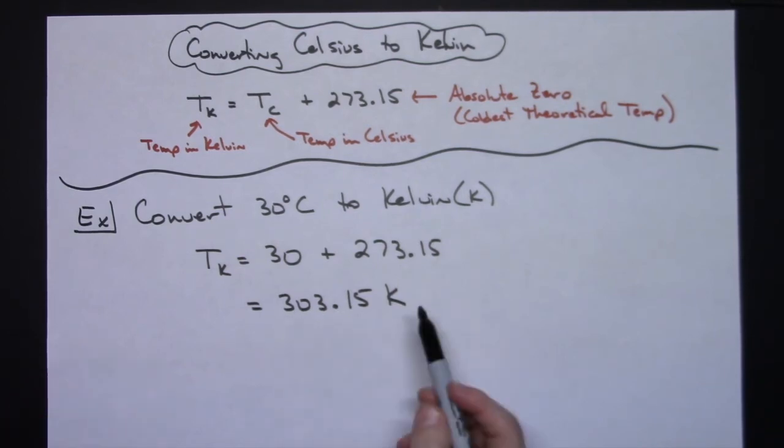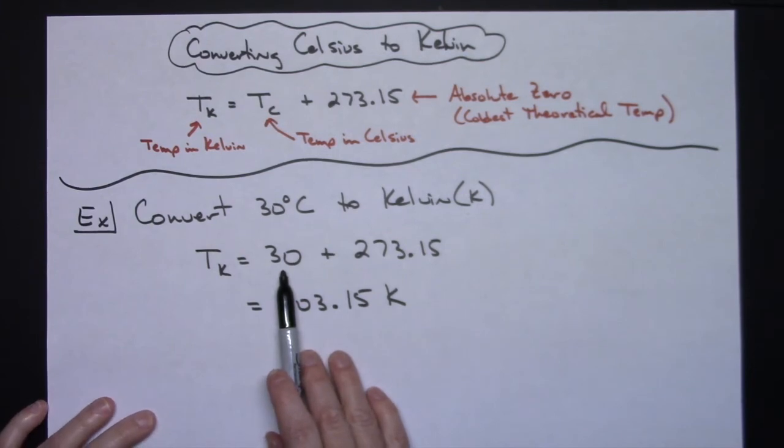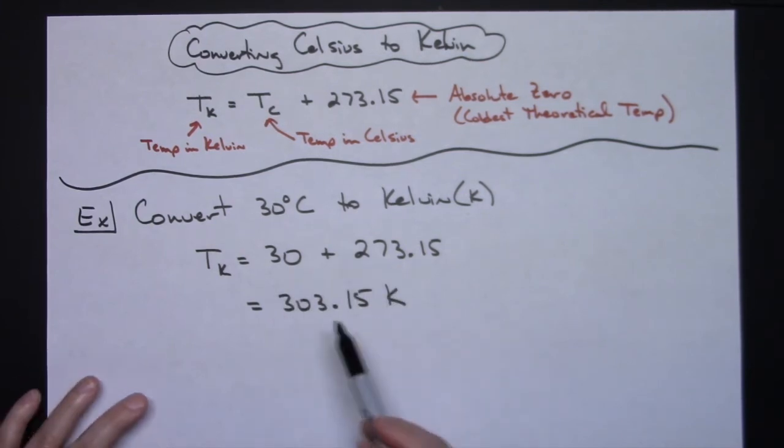Okay, so the math is not hard on this at all. It's straightforward, taking that 30 degrees there, adding it to the 273.15.